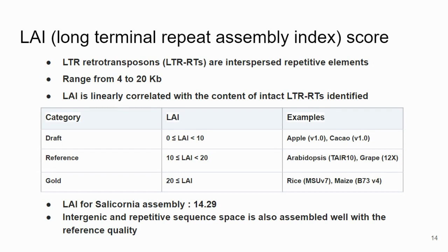The BUSCO score gives us an idea about the coding part of the genome, while assembling the repetitive part is the main challenge for any genome assembly. For this we calculated the LAI index, which is linearly correlated with the content of intact LTR retrotransposons identified in the genome. Our assembly achieved an LAI of 14.29, which comparing with the reference table corresponds to reference quality, meaning that the intergenic and repetitive sequence space is also assembled well.